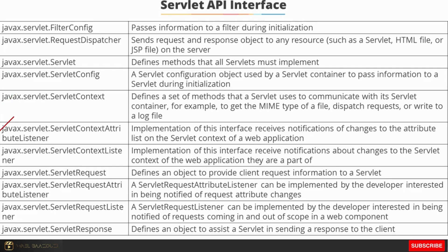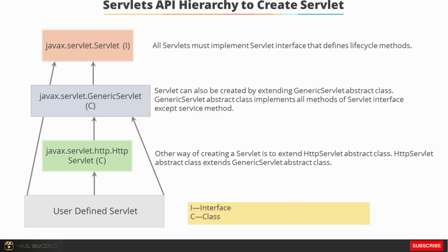The ServletContextAttributeListener receives notifications of changes to the attribute list on the servlet context of a web application. Similarly, ServletContextListener receives notifications about changes to the servlet context of the web application. ServletRequest defines an object to provide client request information to a servlet. ServletRequestAttributeListener can be implemented by a developer interested in being notified of request attribute changes. ServletRequestListener can be implemented by a developer interested in being notified of requests coming in and out of scope in a web component. ServletResponse defines an object to assist a servlet in sending a response to the client.